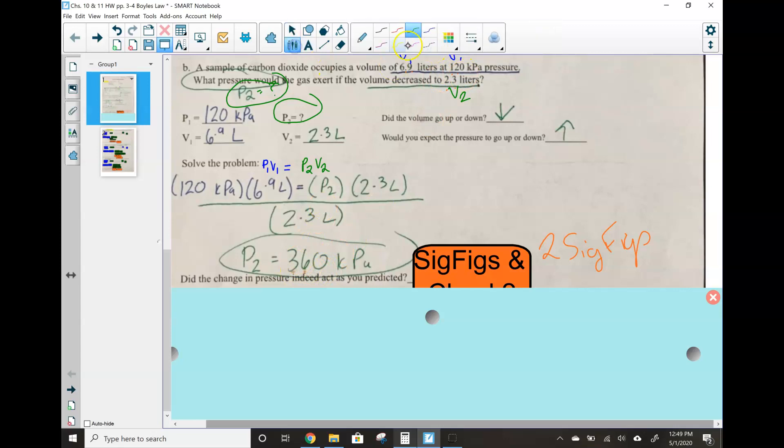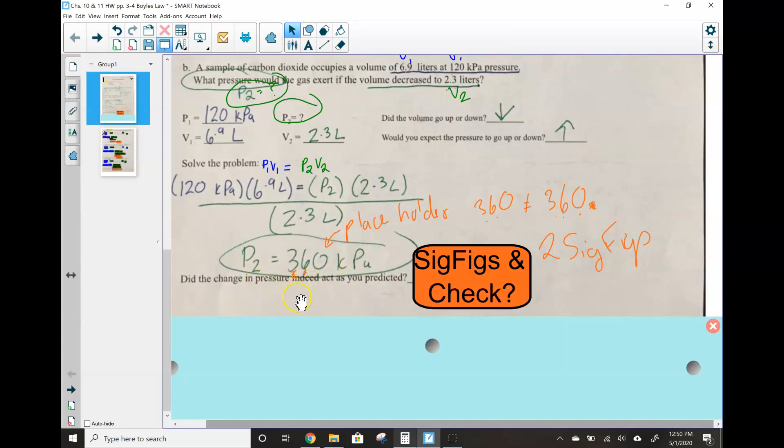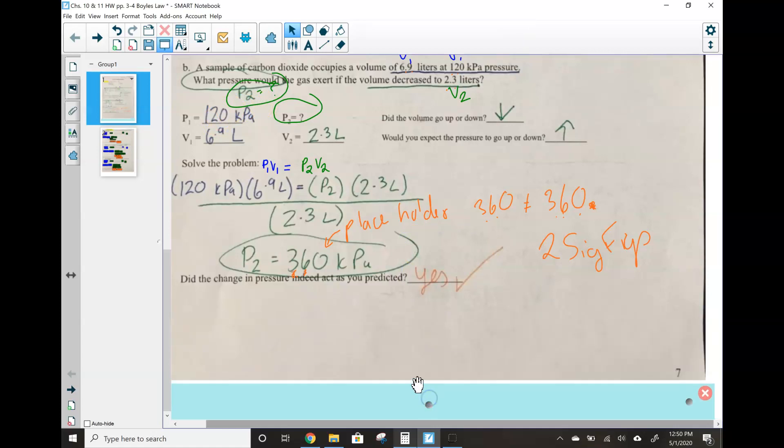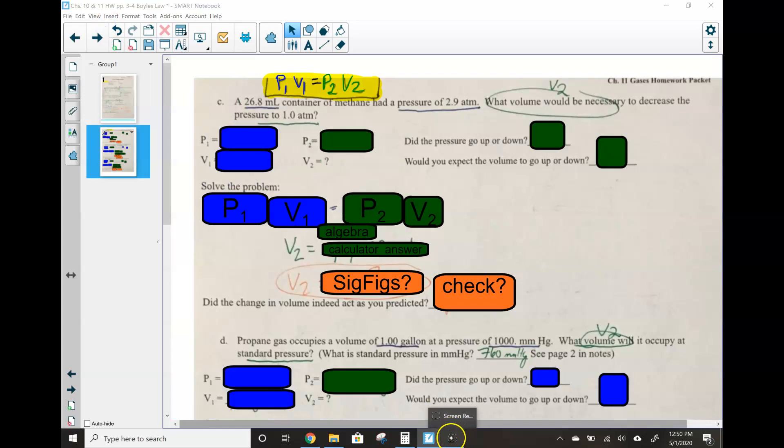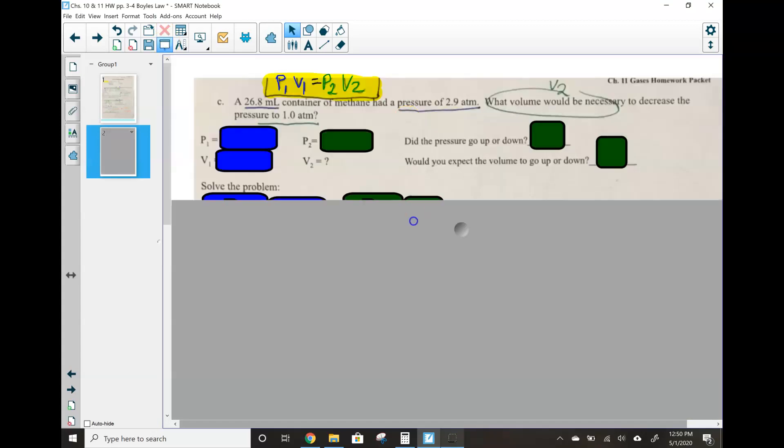So remember that the number 360 is not the same as 360 point, okay? That has three sig figs. That has two. So we're all good. But we have to check our final check. Did the change in pressure indeed act as you predicted? So we thought that pressure should go up. Because volume went down, pressure should go up. So did it go up above 120? Yes. And it went quite above, up above 120. So that means we are all good. On to the next page.